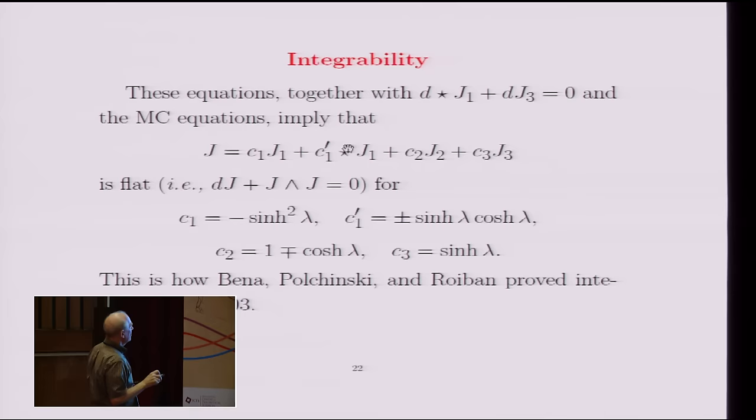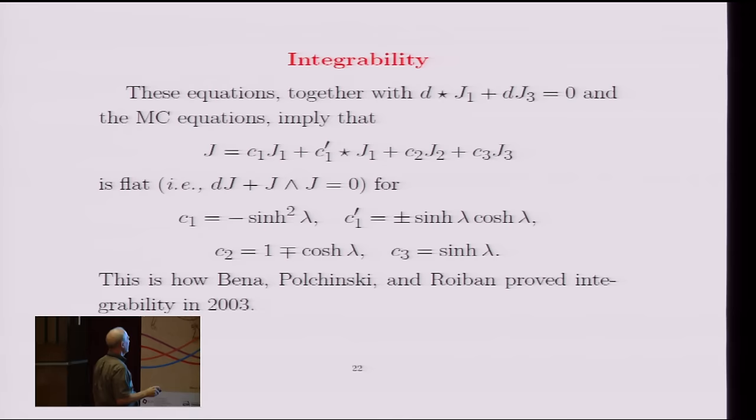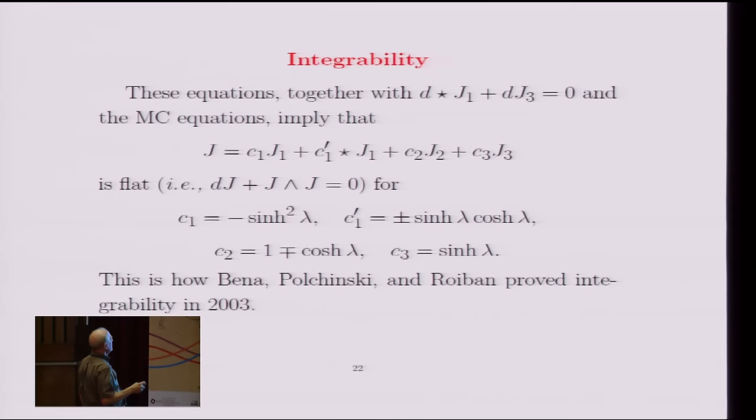Then I can reproduce the proof of integrability that was given by Bena, Polchinski, and Roiban back in 2003. And what they did was to construct a one-form that is flat and depends on a spectral parameter, which they call lambda, which is not to be confused with the 't Hooft parameter. And this is exactly what I find is an exact agreement with what they found.